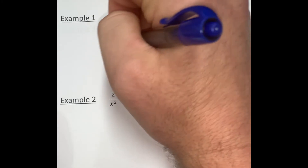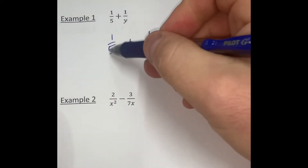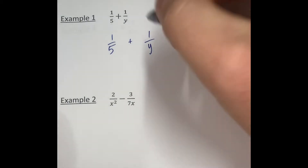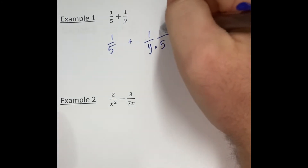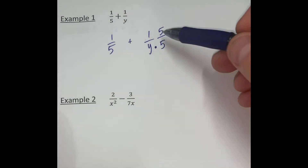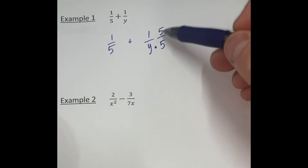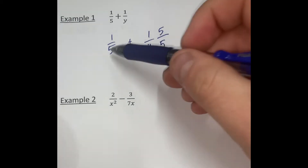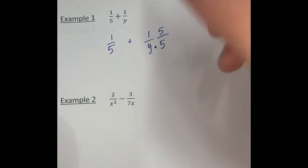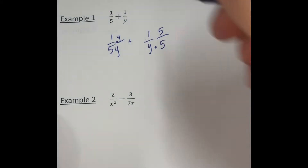If we look at 1 over 5 and 1 over y, we want the denominators to be the same. This denominator has a 5; this denominator does not have a 5, so we can multiply that denominator by 5. However, if we multiply the denominator by 5, we must also multiply the numerator by 5, because 5 over 5 is 1 and anything times 1 is itself. This expression has a 5 in the denominator but does not have a y, so we can multiply the denominator by y, but we must also multiply the numerator by y for the same reason.